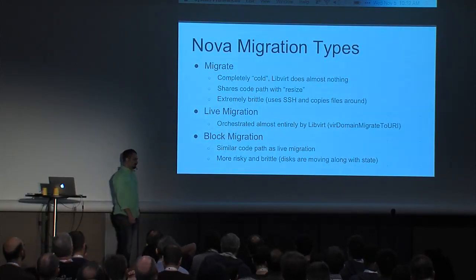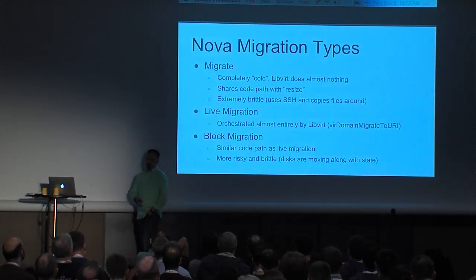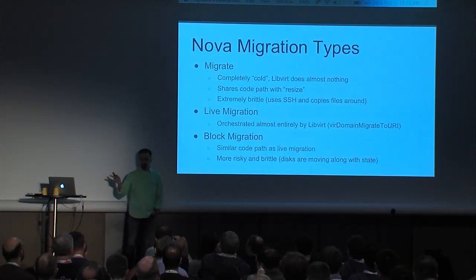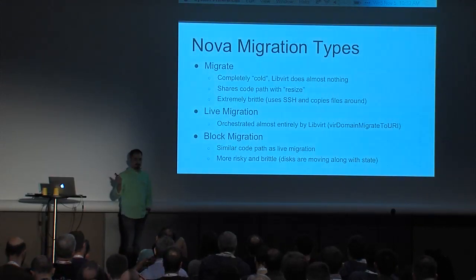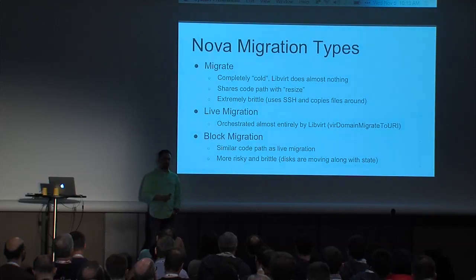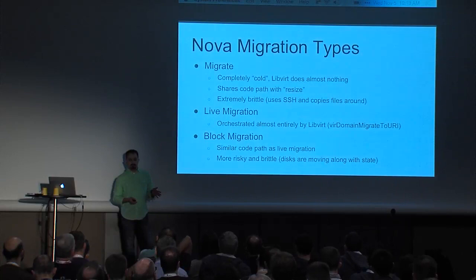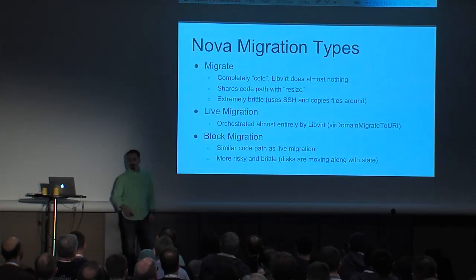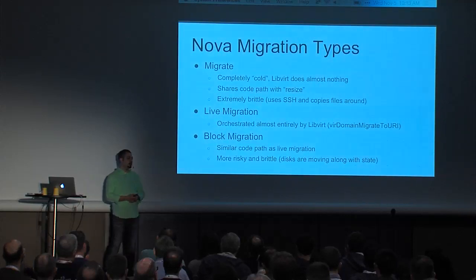There are three different types of migration available in Nova. The first is migrate, which is entirely cold — regardless of instance state, it shuts down the instance and copies it around. The second type is live migration — in contrast to standard migrate, live migrations are handled almost entirely by LibVirt, rather than doing anything crude from outside of LibVirt and moving files around. Block migration is pretty similar to live migration but moves the disks around, making it a more risky operation.